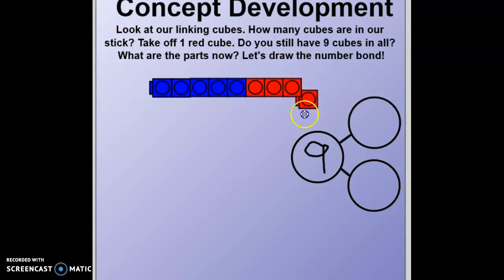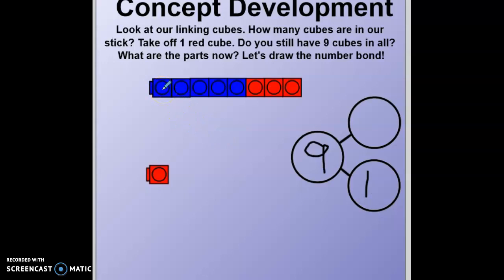It says take off one red linking cube. Now, we have to figure out our two parts. How many did we take away? Just this one — so that's one of our parts. And then let's count our top part: one, two, three, four, five, six, seven, eight. There are two parts. I know it's tricky because it's not like we've been separating with red and blue — we're separating with top and bottom. But stick with me and I promise it'll be easier to understand.